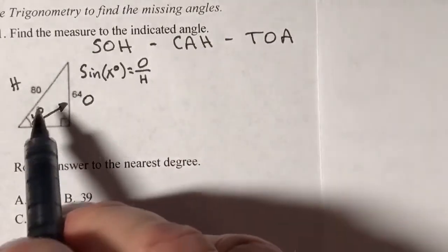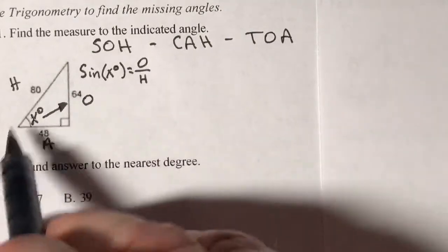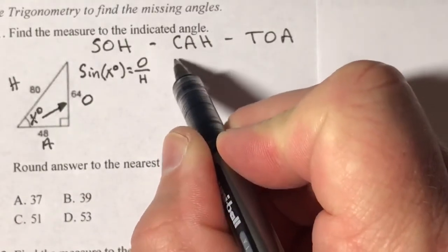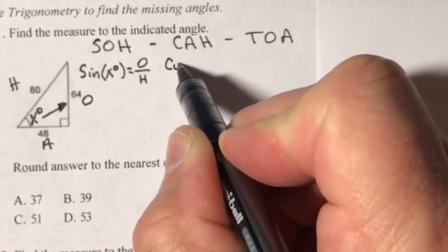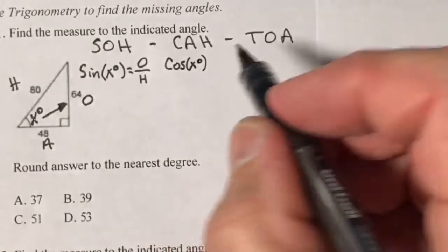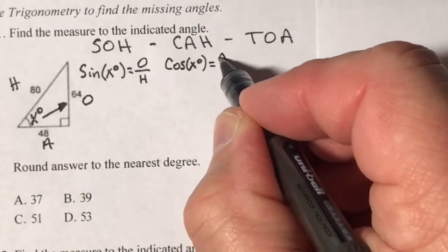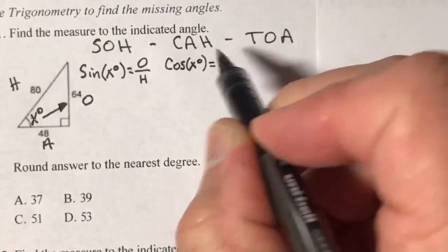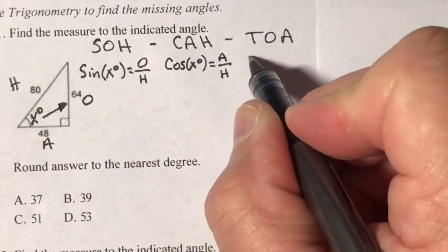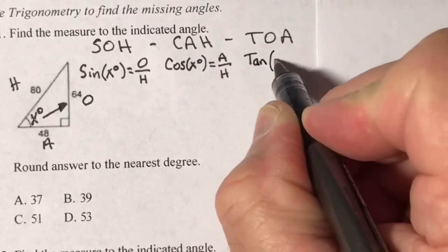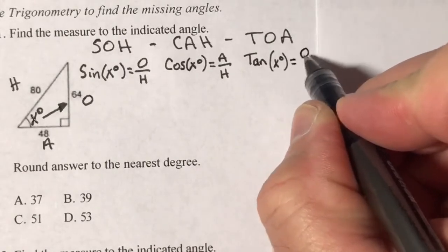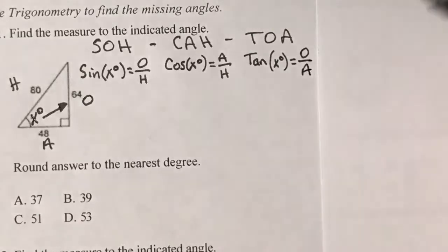Cosine is abbreviated as cos, with the reference angle you're finding, equal to adjacent over hypotenuse. Tangent is abbreviated as tan, and x degrees equals opposite over adjacent.